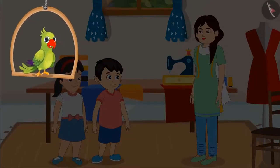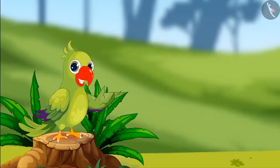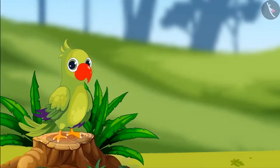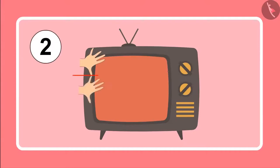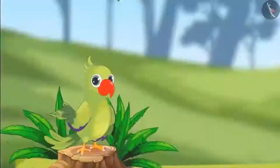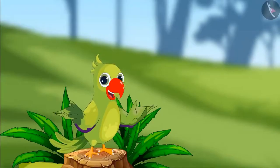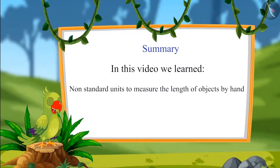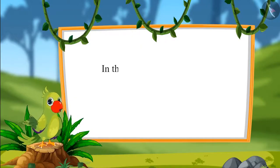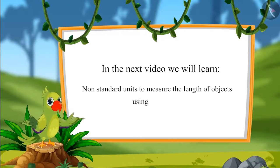So, did you see, children, to know the length of the object, we measure them. In this video, we measured objects using handspans. Just like the width of this TV: one, two, three — three handspans wide. So, children, that was all for today. In this video, we learned some non-standard units to measure the length of objects by hand. In the next video, we will learn some non-standard units of measuring the length of objects using our foot. Till then, bye-bye, children.